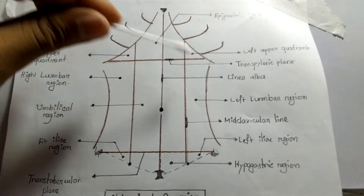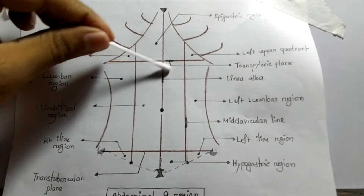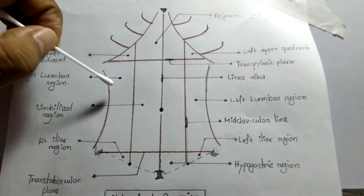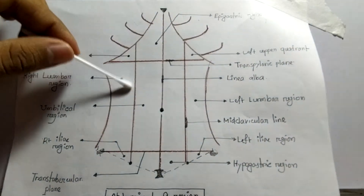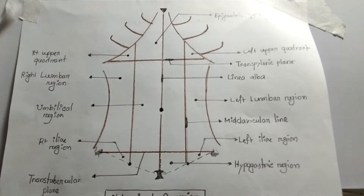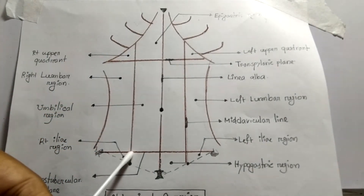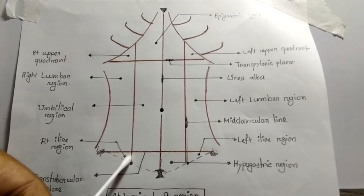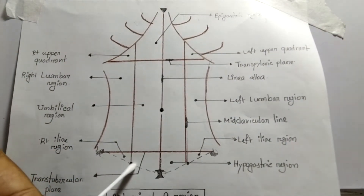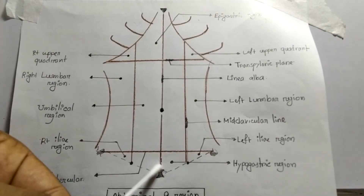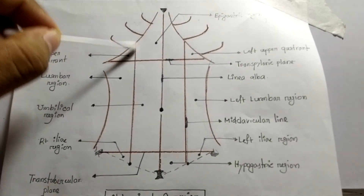These lines make the abdomen into nine regions. This is called the epigastric region, this is called the umbilical region — because the umbilicus is present in this region. This is the flank, or anatomically it is called the lumbar region. This is the right lumbar region and this is the left lumbar region. The triangular area here is called the right iliac fossa or region, and this is the left iliac region.